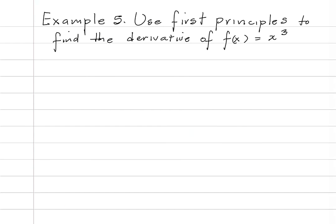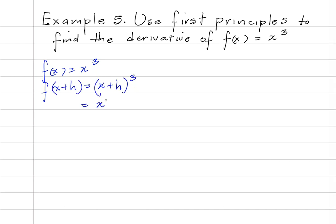Example 5 says, use first principle to find the derivative of f of x is equal to x cubed. So we're going to have f of x is equal to x cubed, and f of x plus h is equal to x plus h cubed. And this would be equal to x cubed plus 3x squared h plus 3x h squared plus h cubed.